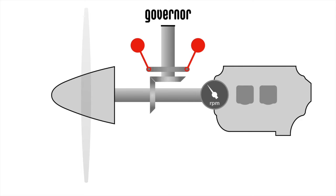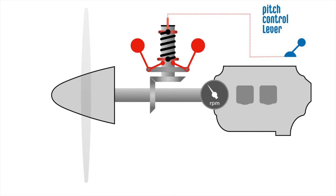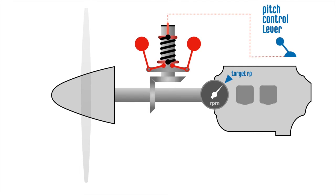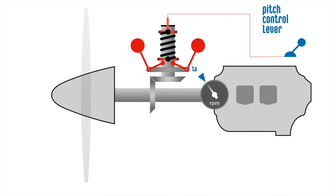The pilot can control how much the flyweights move through a blue lever called the propeller pitch control. This lever sets tension in a spring attached to the flyweights. It allows the pilot to request a target RPM which the constant speed unit will automatically try to keep constant in flight.